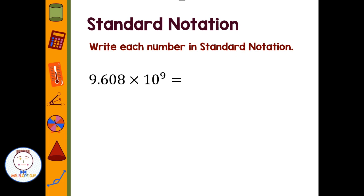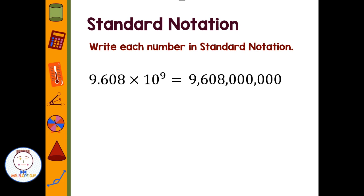We can go in the opposite direction — take numbers that are in scientific notation and put them into standard form. So 9.608 times 10 to the ninth means I need to move that decimal nine places to the right. It's going to take three to get past the eight, and I'm going to need six more zeros — so nine billion six hundred eight million.